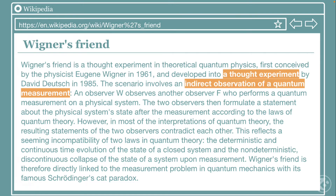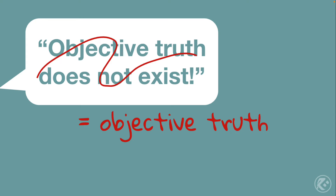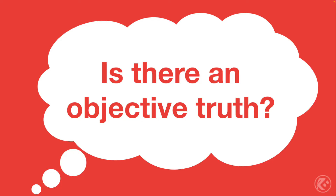Occam's razor would suggest that reality is objective and that there is not a multi-universe theory — Occam's razor would suggest that what we see is what exists. You may not agree that there's an objective truth, but even if you say that objective truth does not exist, that statement alone would disprove itself. The statement would require there to be an objective truth for you to say there is not objective truth. So for this exercise, let's explore what it would look like to understand objective truth.